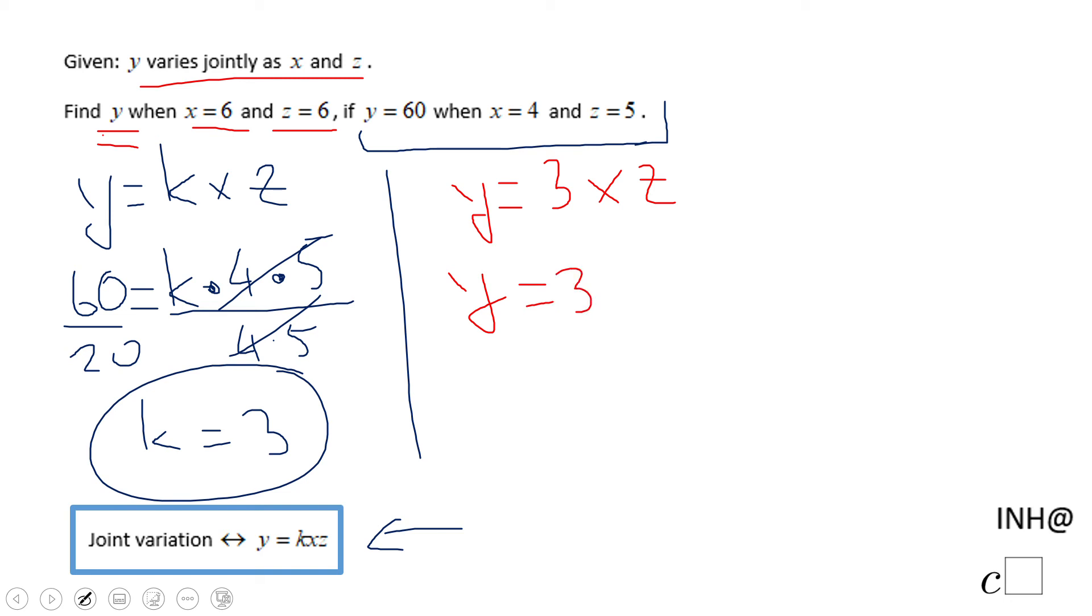K is 3, X is 6, and Z is 6, so we have 3 times 6 times 6, which is gonna be 108. So that is the value of Y in this problem.